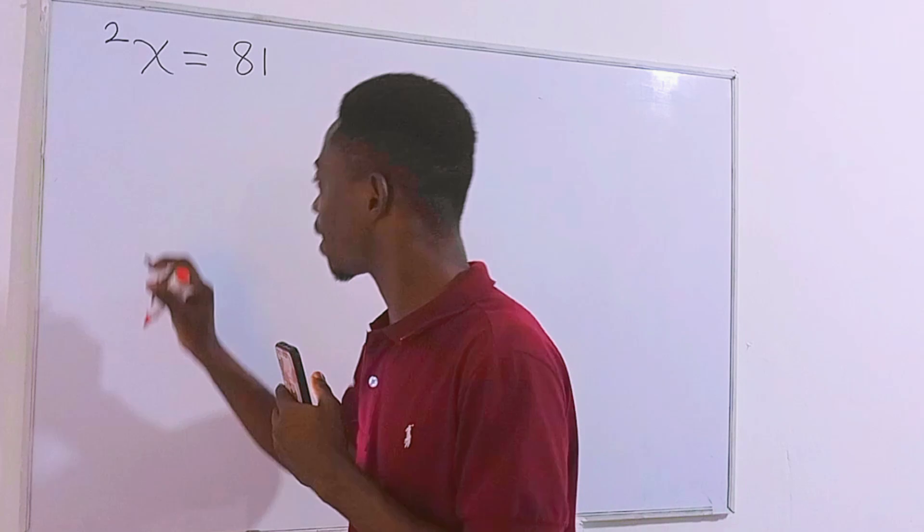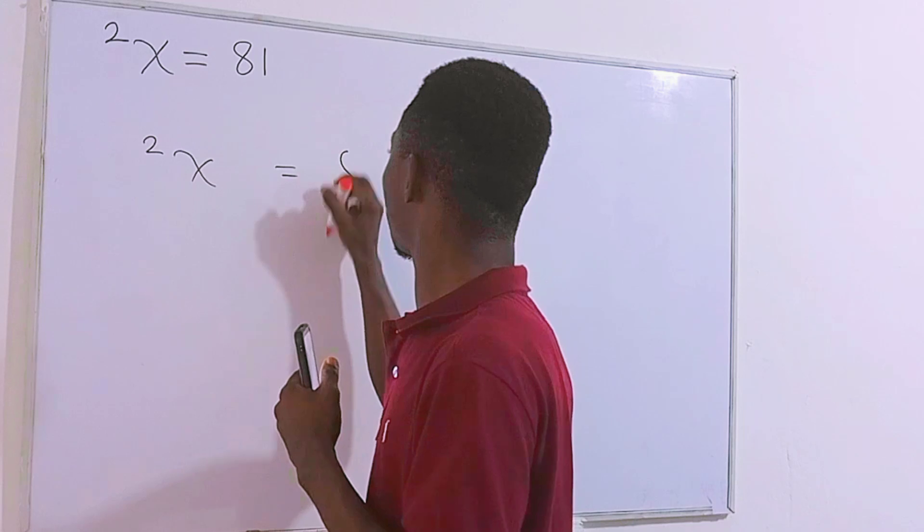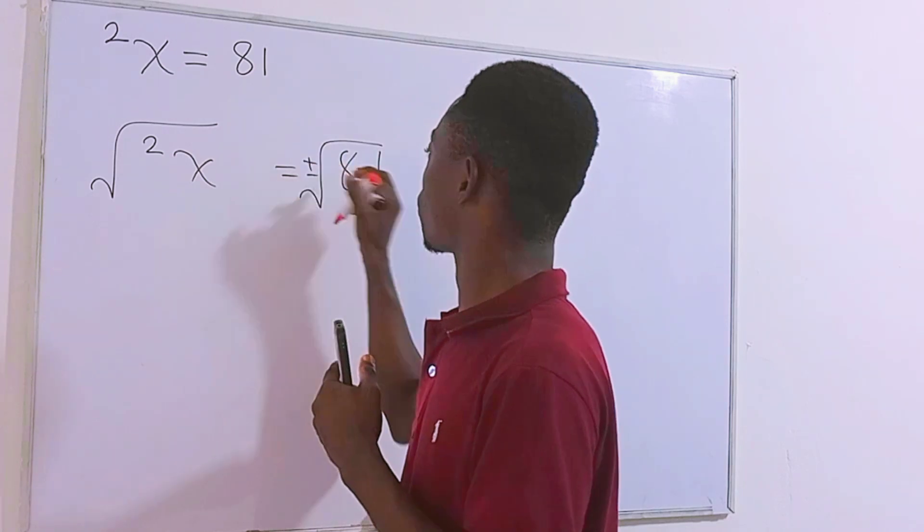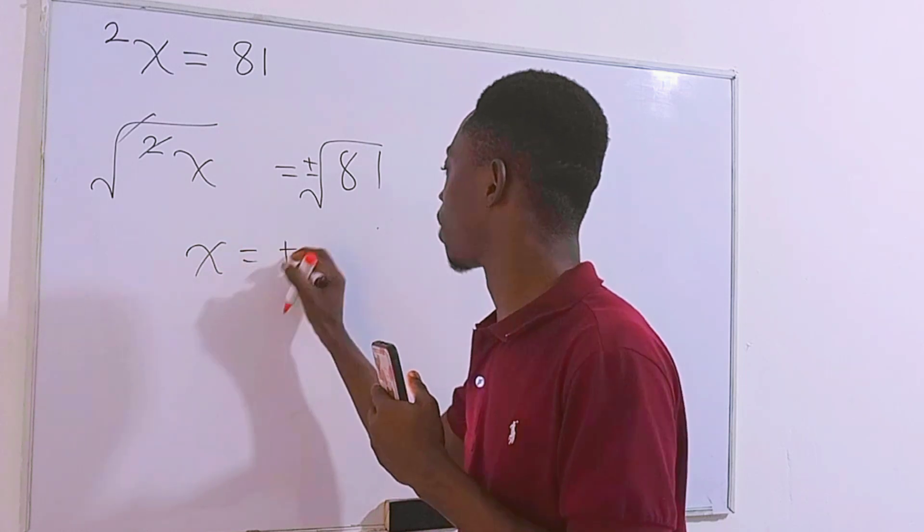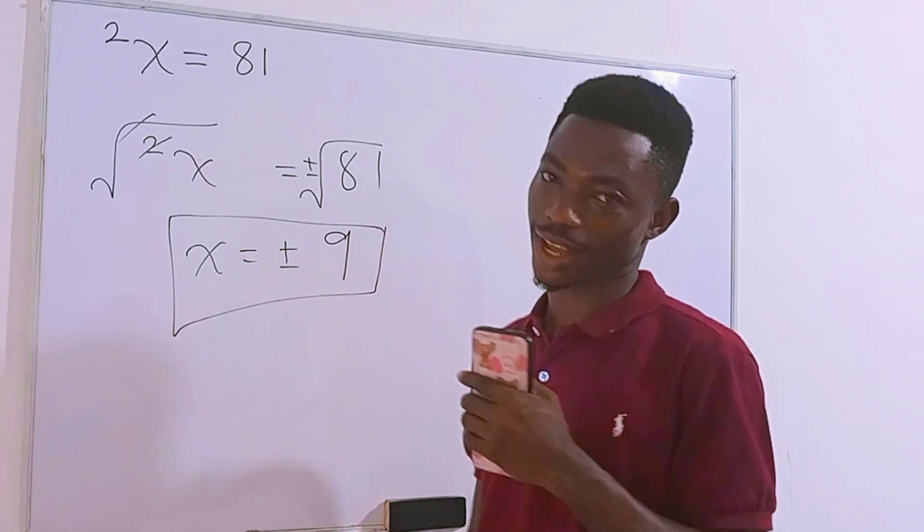In fact this question is pretty much simple because we have this right here. What we will basically do is that we take square root on each side of the equation, plus or minus is important, this and that will go and we are left with x is equal to plus or minus 9 and we are done.